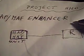So we're gonna use a resistor. They call it MAP MAF Enhancer. So we have the MAP MAF unit, and we're gonna connect this resistor, the MAP MAF Enhancer.